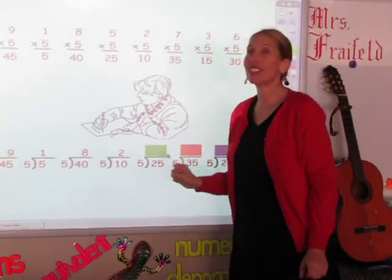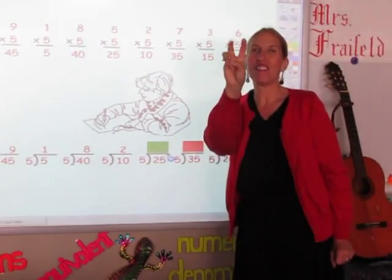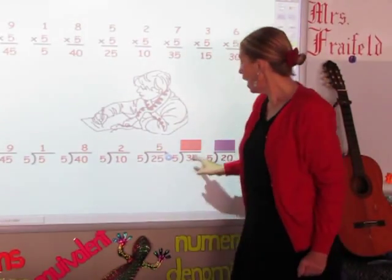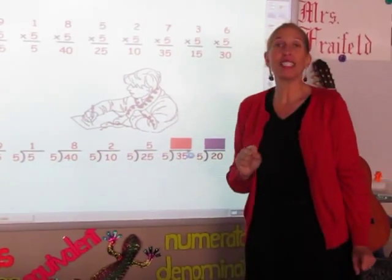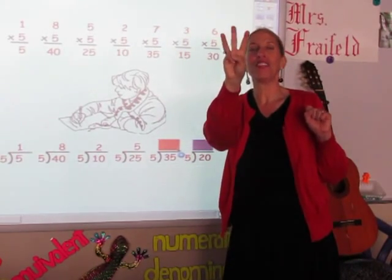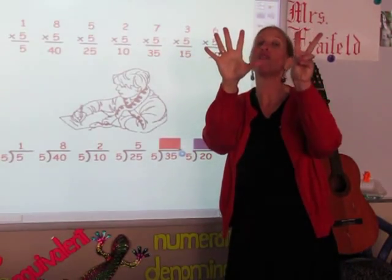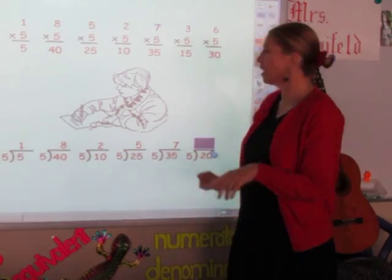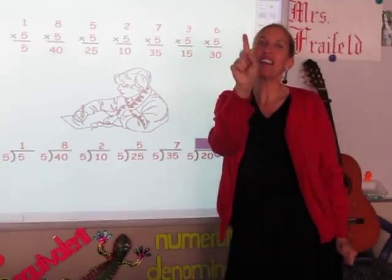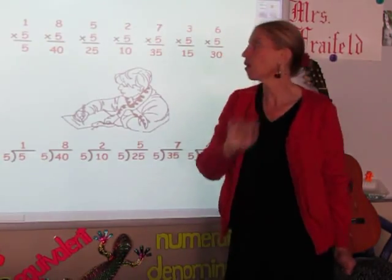I'm going to say my fives until I get to 25: 5, 10, 15, 20, 25. Five is my answer. Now I'm going to say my fives until I get to 35: 5, 10, 15, 20, 25, 30, 35. My answer is seven. Now I'm going to say my fives until I get to 20: 5, 10, 15, 20. The answer is four.